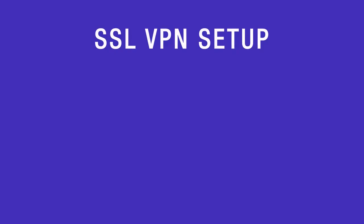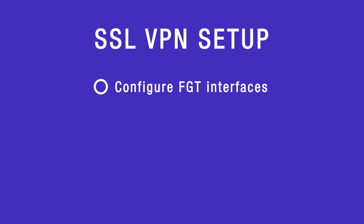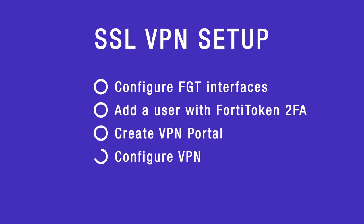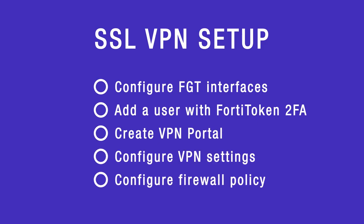The FortiGate setup follows the same steps for both the web and the tunnel mode with only minor differences. We are going to configure the interface and the firewall address, after that we will configure VPN settings and create a firewall policy.